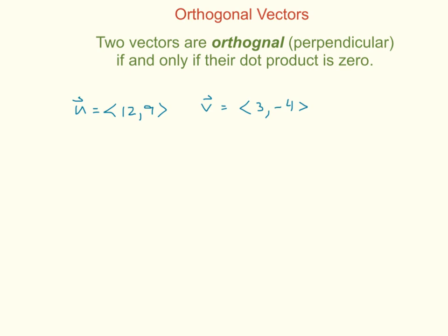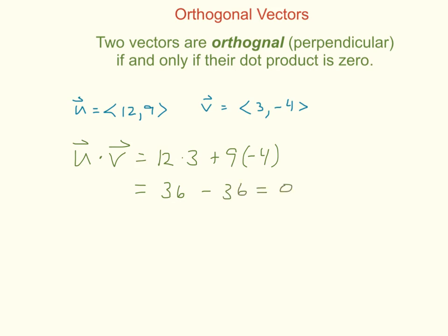For example, given vectors u and v, to determine if they're orthogonal, I take the dot product: 12 times 3 plus 9 times negative 4, which is 36 minus 36, which equals 0. Therefore, u and v are orthogonal. If the dot product came out to be anything other than 0, they would not be orthogonal, and therefore not perpendicular.